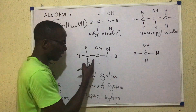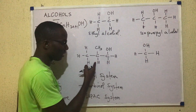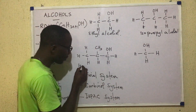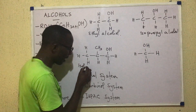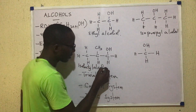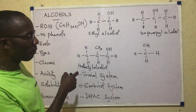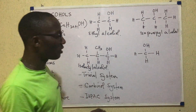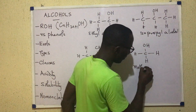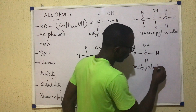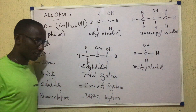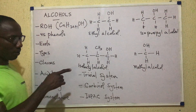This next compound has four carbons, so we'll call it isobutyl alcohol. And this last one is called methyl alcohol.